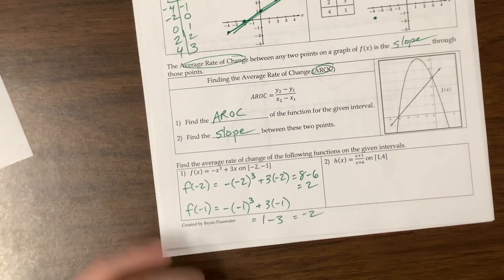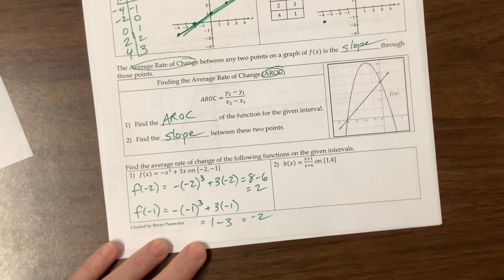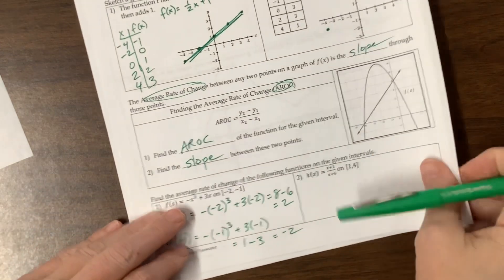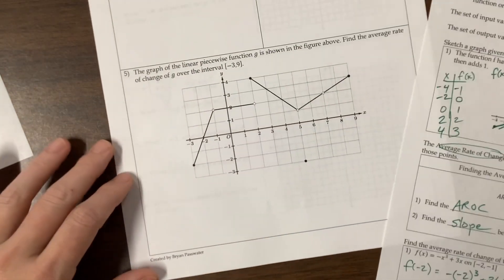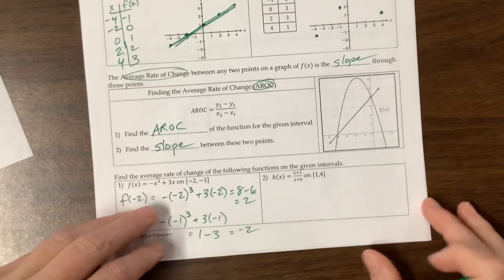So the next one, it's a similar idea. We're going to find h of 1. We're going to find h of 4. I'm going to stop the video here and let you practice that on your own. And let's see. Yeah. We'll stop there for now. Go practice. Good luck to you.